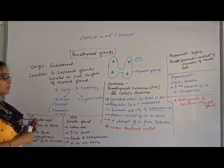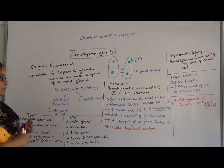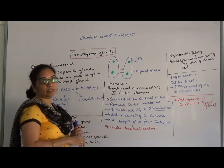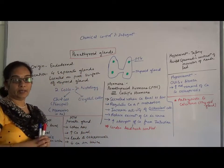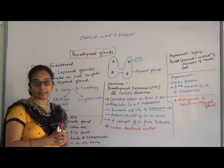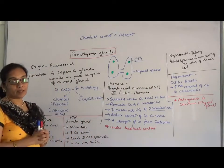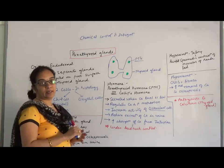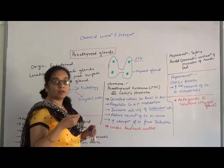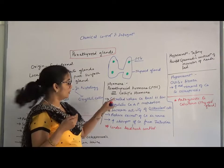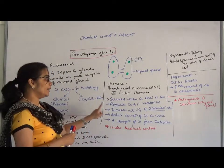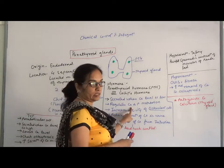What is the function of this parathyroid hormone? Parathyroid hormone is secreted when the calcium level in the blood is very low. This parathyroid hormone is under a feedback mechanism — if the calcium level is low, then the parathyroid hormone is secreted. It regulates calcium and phosphorus metabolism.